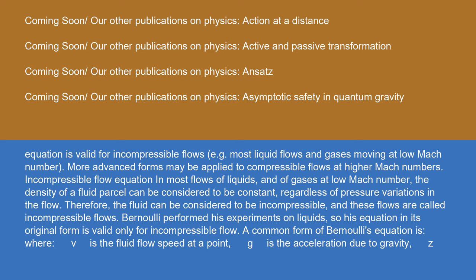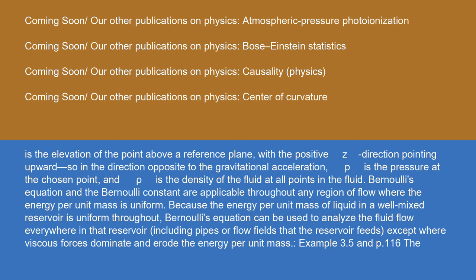A common form of Bernoulli's equation involves the following variables: v is the fluid flow speed at a point; g is the acceleration due to gravity; z is the elevation of the point above a reference plane, with the positive z direction pointing upward — that is, in the direction opposite to the gravitational acceleration; p is the pressure at the chosen point; and rho is the density of the fluid at all points in the fluid.